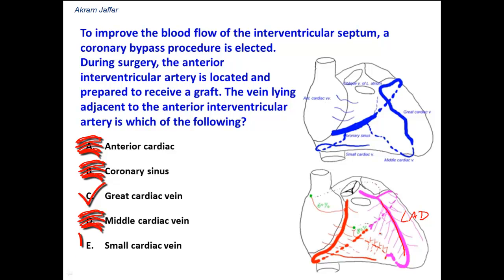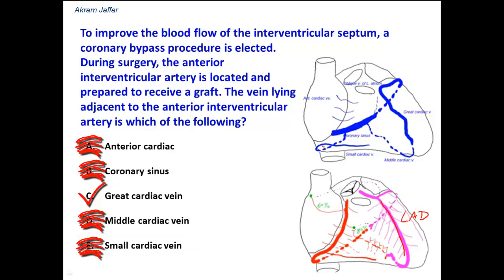The small cardiac vein? No, because the small cardiac vein is located at the inferior border of the heart. The artery it accompanies is the marginal artery — the acute marginal artery. The small cardiac vein then drains into the coronary sinus.